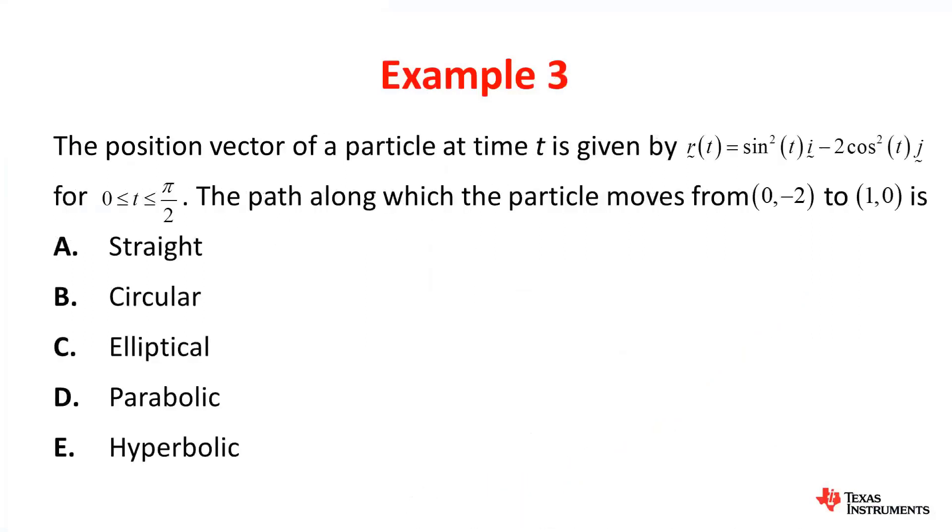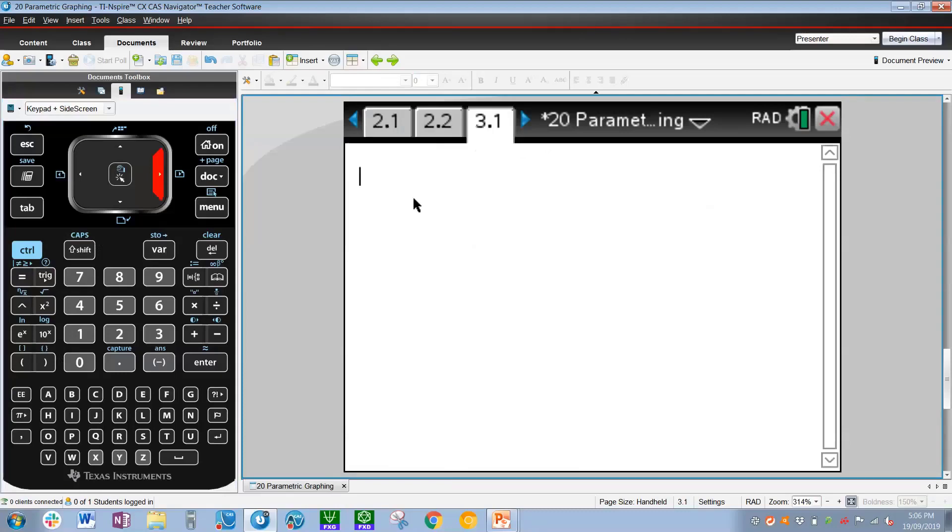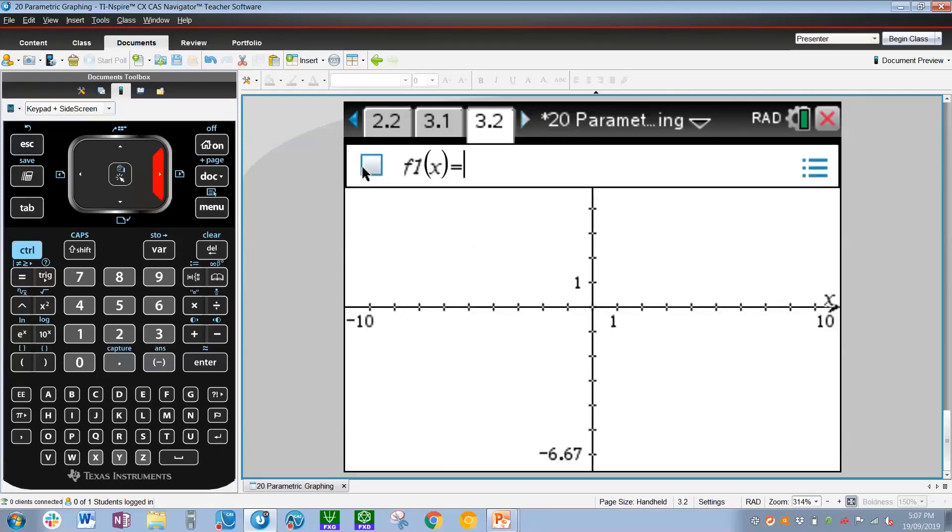Moving on to our final example, which is example 3. The position vector of a particle at time t is given by r of t is equal to sin squared of ti minus 2 cos squared of tj for t values between and including 0 and pi on 2. The question says, the path along which the particle moves from 0, negative 2 to 1, 0 is? Is it either straight, circular, elliptical, parabolic, or hyperbolic? In order to answer this question, all we really need to do is go to a new problem, which is a new calculator page. We can either use the Pythagorean identity to understand the problem, or we can actually just use a graph. So I'm going to use a graph initially, and then we'll use the Pythagorean identity later on.